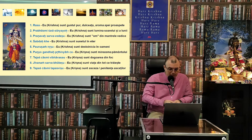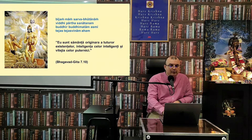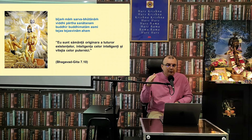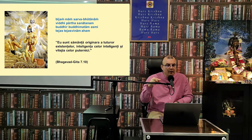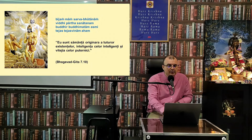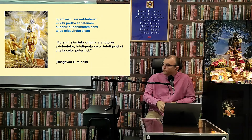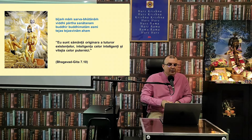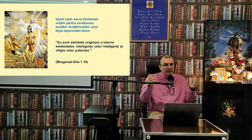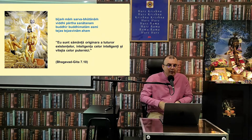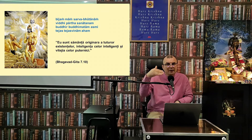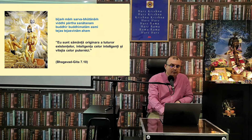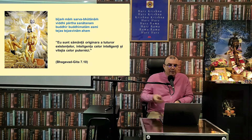Bhagavad Gita 7-10: Bija mam sarva bhutanam viddhi partha sanatanam, buddhir buddhimatam asmi tejas tejasvinam aham. Eu sunt sămânța originară a tuturor existenților, inteligența celor inteligenți și vitejia celor puternici. Trei calități vor fi descrise în acest verset. Calitatea a 10-a: Krishna descrie că El este cauza verticală și orizontală a creației, cauza diferitor opulențe extraordinare și substratul din spatele lucrurilor extraordinare din cadrul Universului.